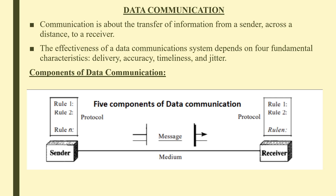The effectiveness of a data communication system depends on four fundamental characteristics: delivery, accuracy, timeliness and jitter. Delivery means the system must deliver data to the correct destination — received by the intended device or user and only by that device or user. Accuracy means the system must deliver data accurately; data that have been altered in transmission and left uncorrected are unusable.